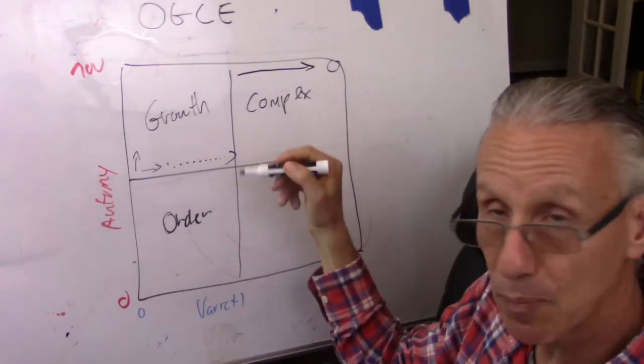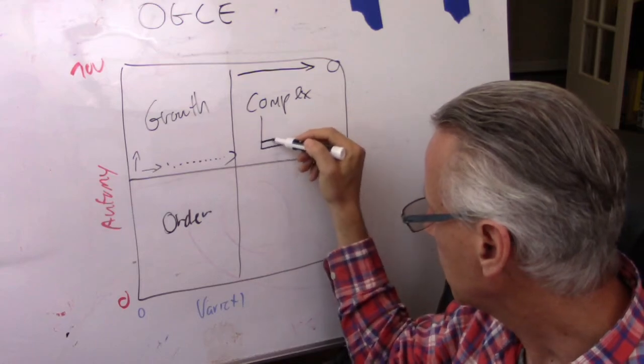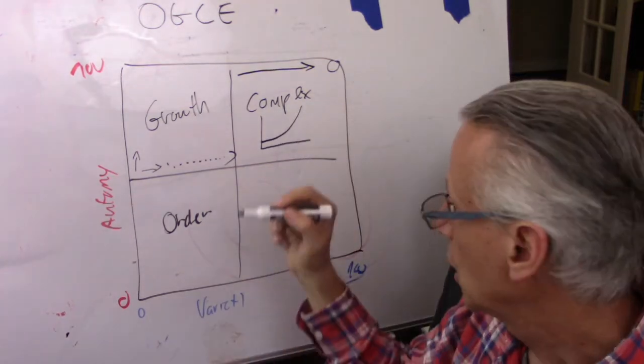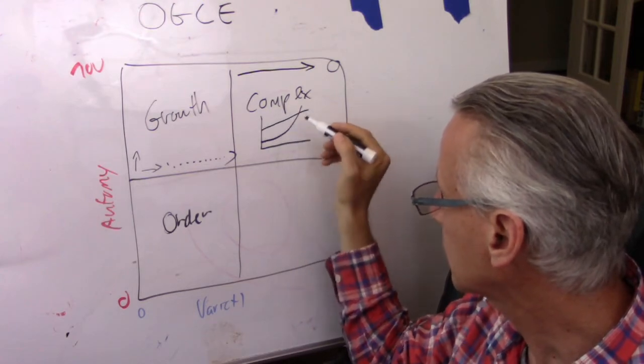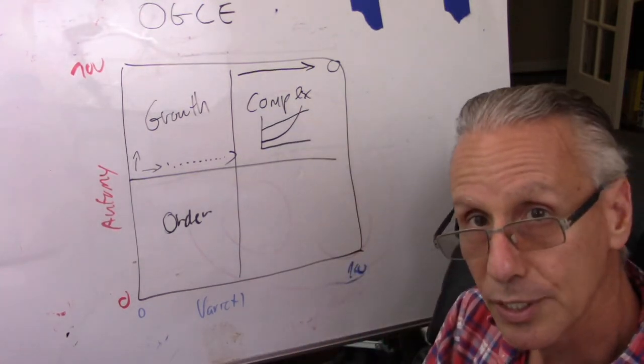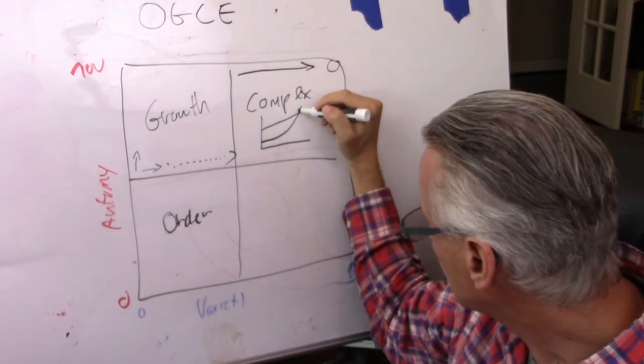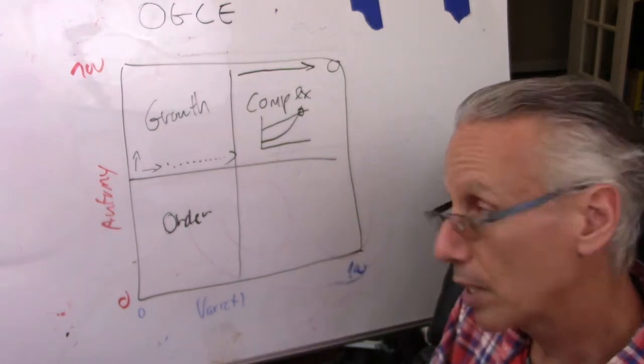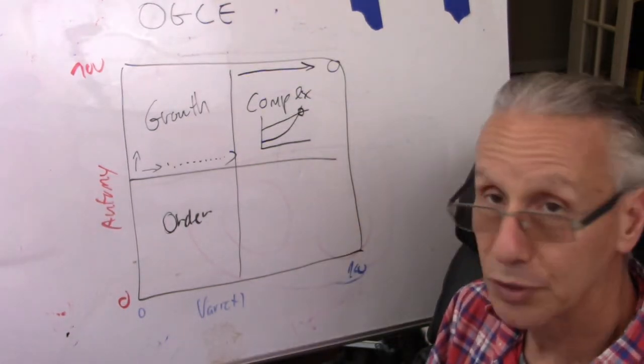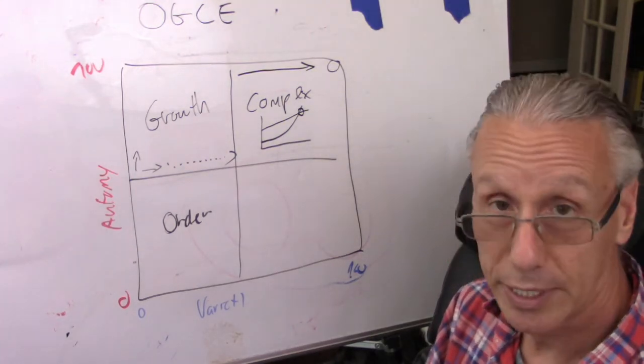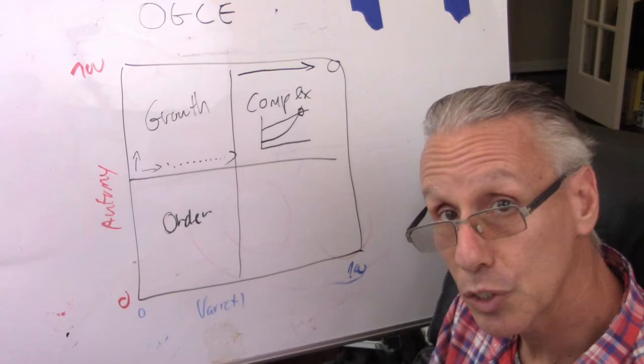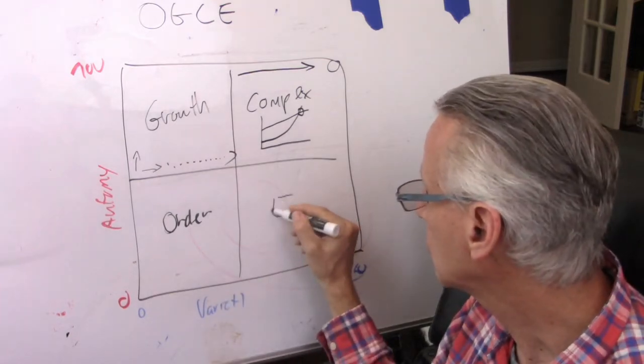Now, what's interesting in complexity is that complexity always grows exponentially. Your resources even can grow exponentially, but it will never grow at the same pace as complexity. And when you reach this stage where you have not enough resources to deal with the complexity, nature protects itself by falling into entropy.